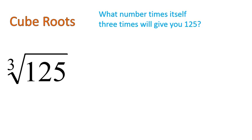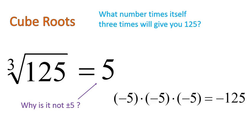Now let's go over this with cubed roots. A cubed root looks like this, and it asks, what number times itself three times will give you 125? And the answer to a cubed root is this. The cubed root of 125 is 5. Now you might ask yourself, why is it not plus or minus 5? And I'll show you that here.